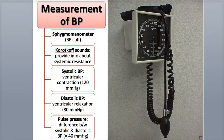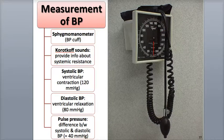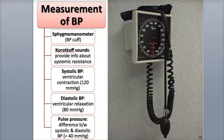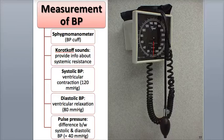The arm where blood pressure is being measured should lay at the same level as the heart. The cuff is then inflated until the brachial artery is compressed and blood flow stops. A stethoscope is then placed on the brachial artery below the cuff and the cuff is slowly deflated. As the artery opens, blood begins to move through the vessel, which creates the first sound heard in the stethoscope.